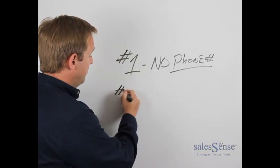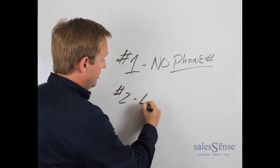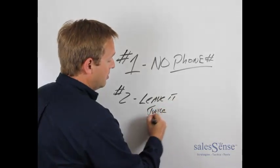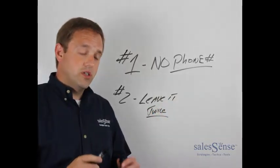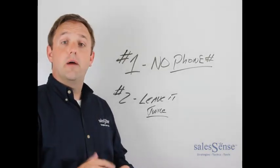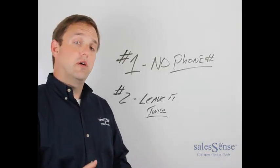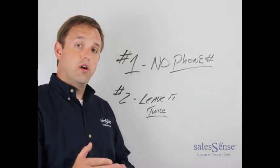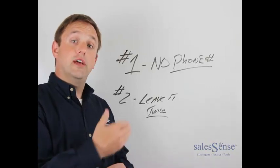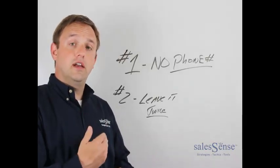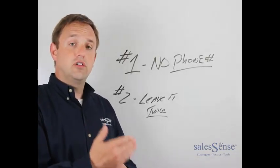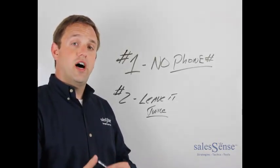Number two, leave it twice. Leave your voicemail number twice. So let's do an example. Hi, I'm Mike Krause with SalesSense. My number is 585-704-6453. The purpose of my call is—tell them the purpose—and at the end, I look forward to connecting with you soon. My number is 585-704-6453.